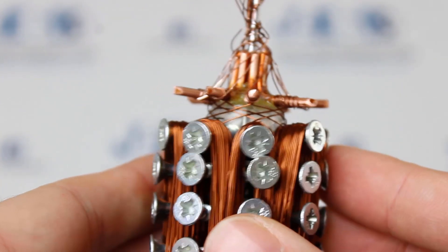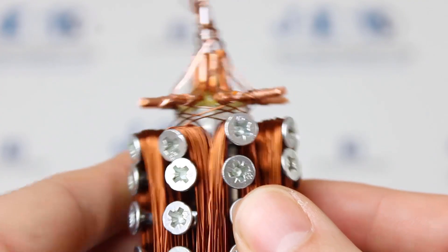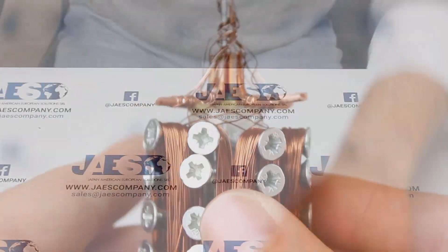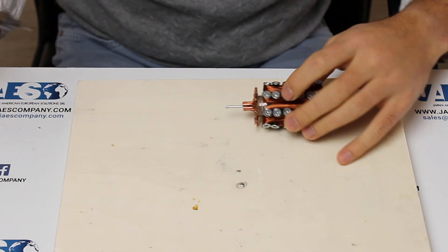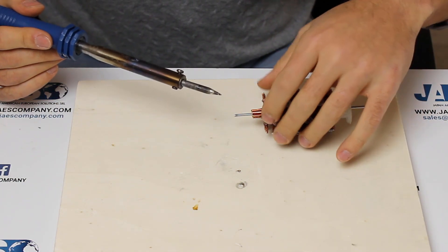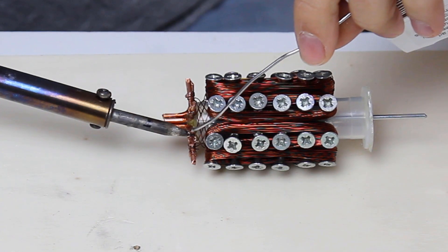This is what we need to get. Okay, now we can weld every single wire terminal on the copper angle brackets.